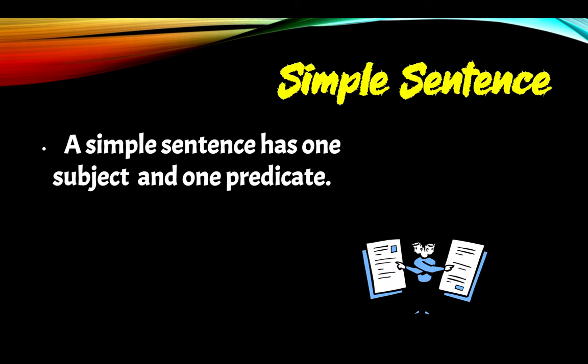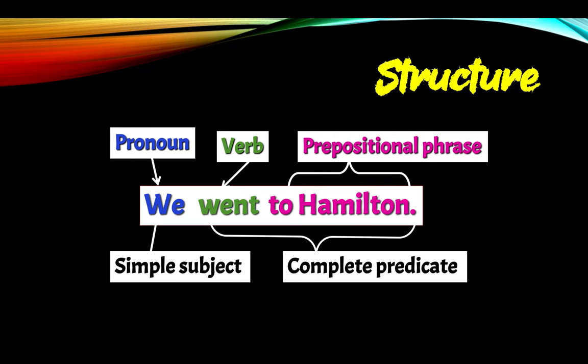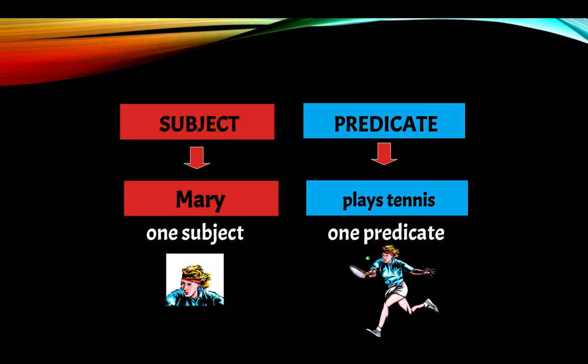Simple sentence. Well, a simple sentence has one subject and one predicate. For example, we went to Hamilton yesterday. We is a pronoun, went is a verb, to Hamilton is a prepositional phrase. So we have we as the simple subject, and went to Hamilton as the complete predicate, because went is a verb — it's the past of to go. So one subject, one predicate. Simple, right?